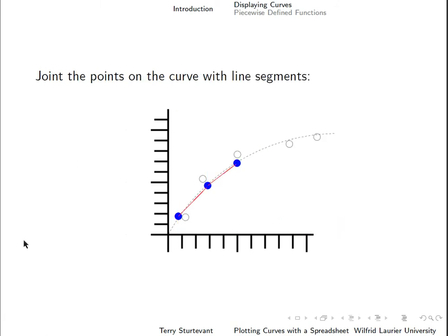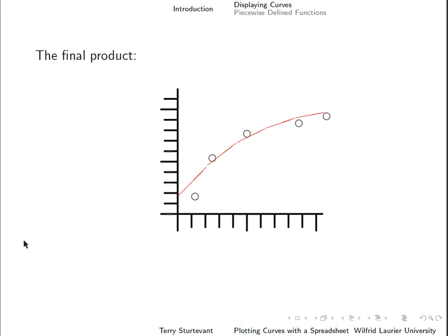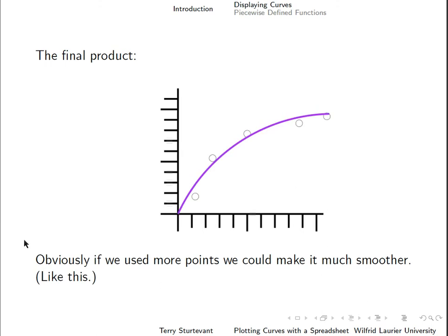Now we can connect those points with straight line segments to get something that is a bunch of straight lines that follow the curve. So then if we take out the dots, then we see that we have something approximating a curve. And obviously, if we used more than five points, we could make it much smoother, like this.